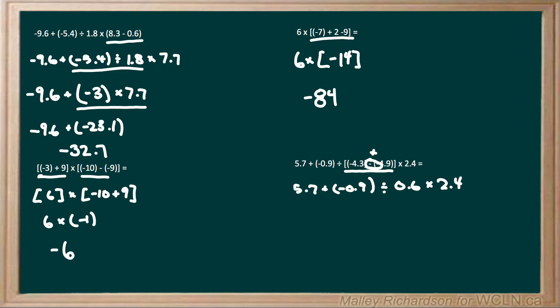So now we have addition, division, and multiplication. We have to do our division and multiplication before addition, and because we have both division and multiplication we start with the furthest left, which is negative 0.9 divided by 0.6. A negative divided by a positive leaves us with a negative answer. So 0.9 divided by 0.6 leaves us with 1.5, giving us negative 1.5, and then we multiply that by 2.4.